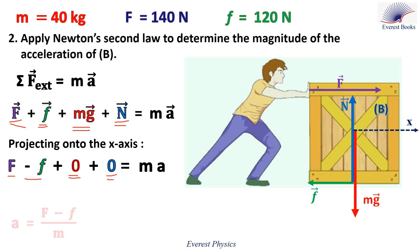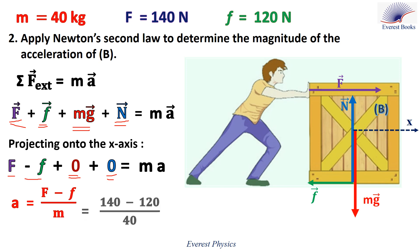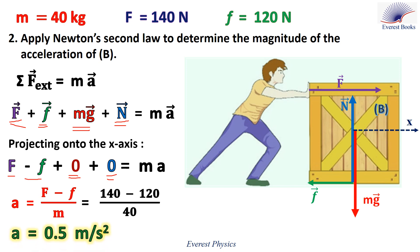Rearranging, we get A equals F minus F_friction over M. F equals 140 newtons, the friction is 120 newtons, and the mass is 40 kilograms. Therefore, the acceleration equals 0.5 meters per second squared.